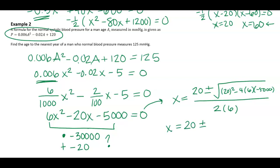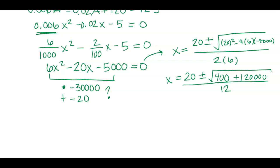20 squared gives me 400. 4 times 6 times 5,000 gives me 120,000, all over 12. Now, when I try to take the square root of that inside piece, I see that I don't have a perfect square.